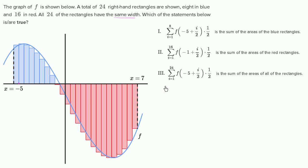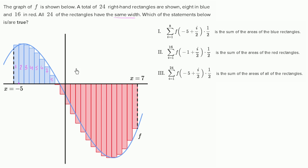Let's go through each of these and see whether they make sense. The first one is the sum of the areas of the blue rectangles. We know we have eight blue rectangles, and we're summing from one to eight. So it seems like we're summing eight things right over here — one, two, three, four, five, six, seven, eight. So this is looking good right over here.